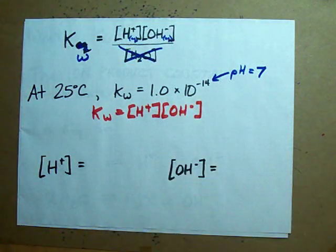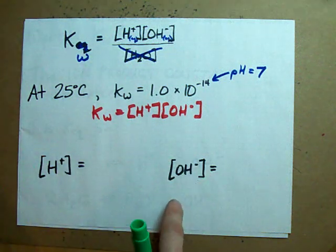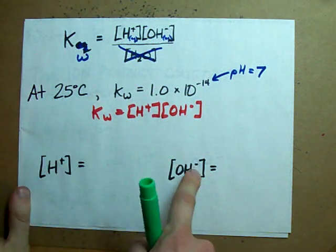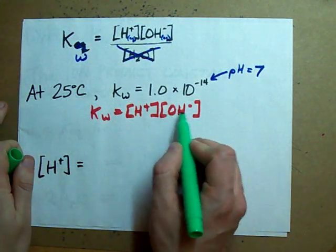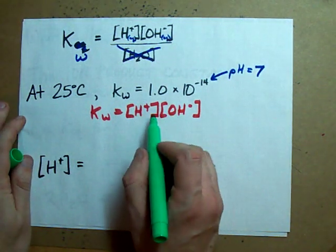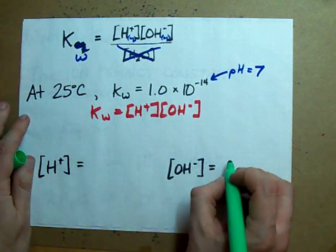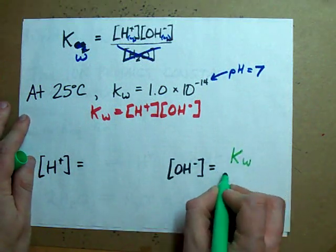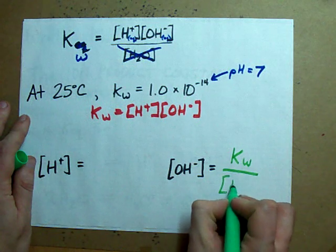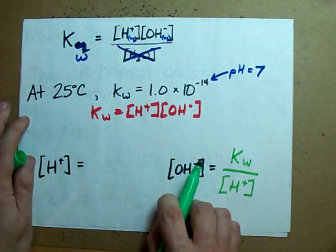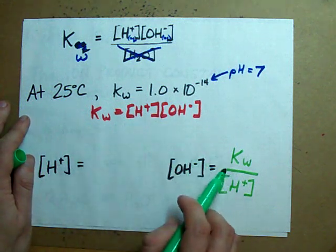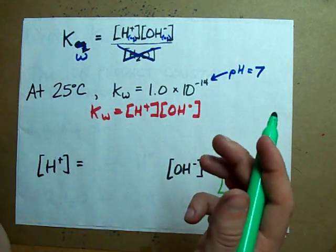So, if you're given the concentration of H-plus, how do you calculate the concentration of OH-minus? Well, that's easy. Just solve for OH-minus here. I take Kw and divide it by the concentration of H-plus. See how I rearranged the equation? I divided both sides by H-plus. Pretty cool.